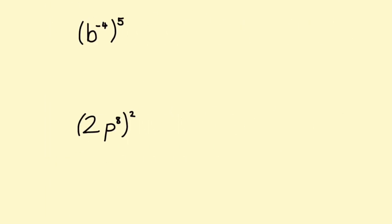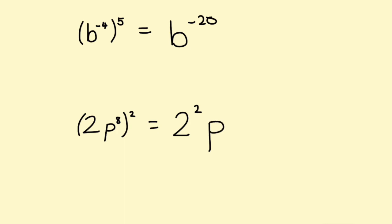For the last set of examples, we need to remember the rule for brackets — you multiply the indices. So b to the power of minus 4, with the brackets to the power of minus 5: minus 4 times 5 is minus 20, so the answer is b to the power of minus 20. The second example has a coefficient inside the brackets as well — you need to square everything inside the brackets. So this becomes 2 squared times p to the power of 8 times 2, giving p to the power of 16. And 2 squared is 4, so that's 4p to the power of 16.